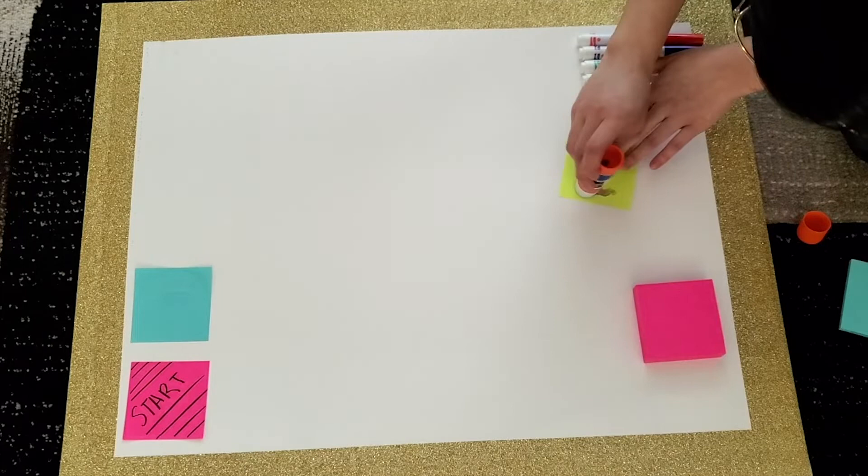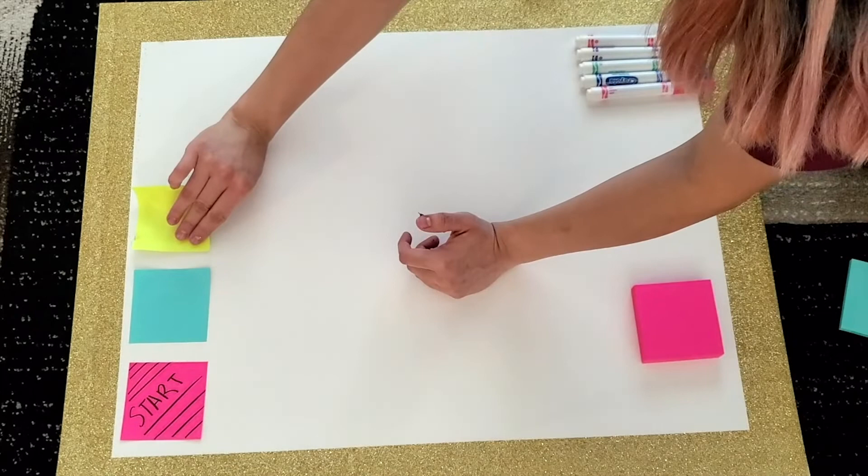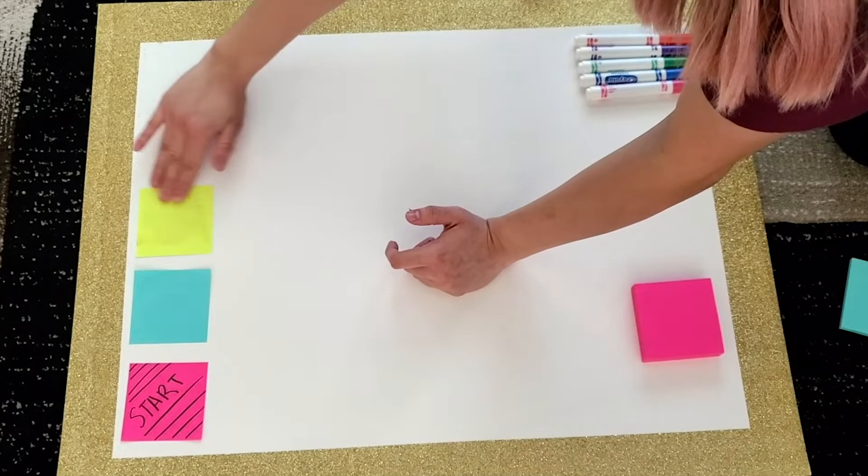And the nice thing about this construction board is that even if you do make a little mistake, like accidentally putting some glue, just like how I did right here, you can see I'm trying to wipe it off. I like this construction board because it easily takes out all the glue sticks, so nothing really sticks onto it. So you can easily clean up any mess.